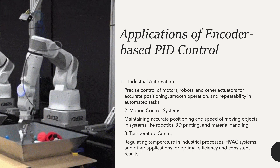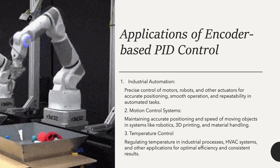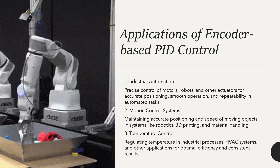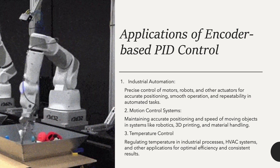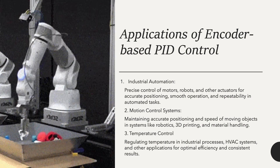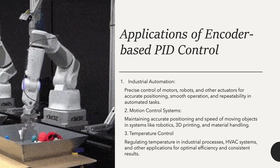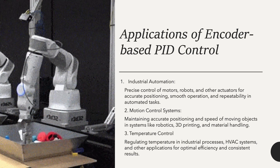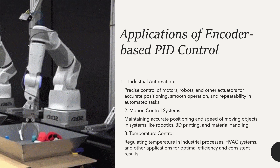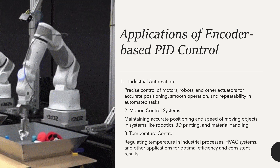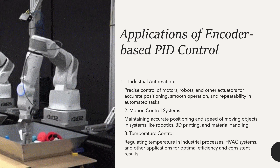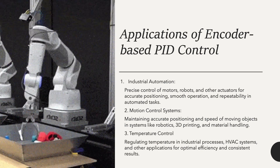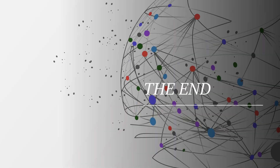PID-based control has many applications in industry. It is used heavily in industrial automation for robotic arms and other machinery, in motion control systems, and in temperature control systems. For example, in a frying machine, PID control is used to maintain a constant temperature, with temperature used as feedback. Thank you.